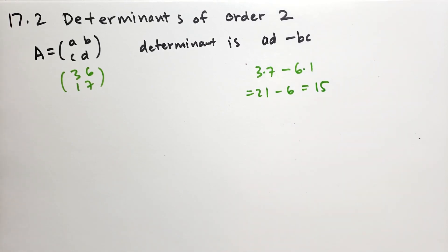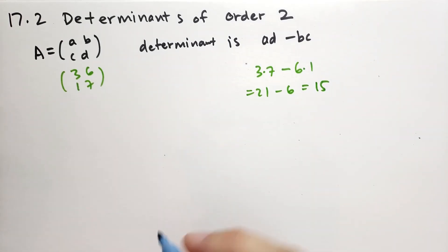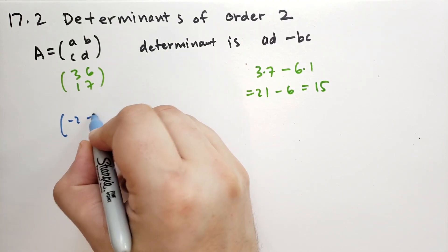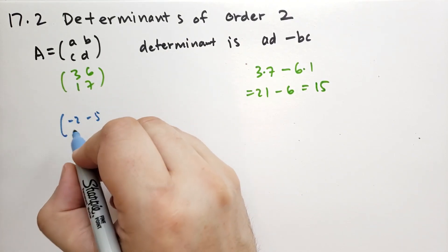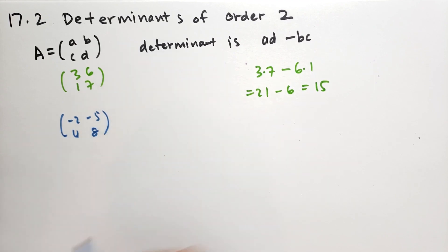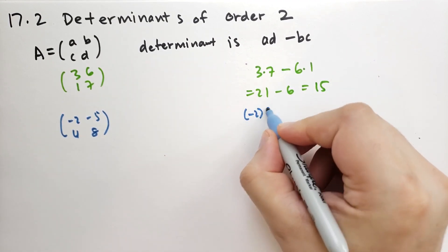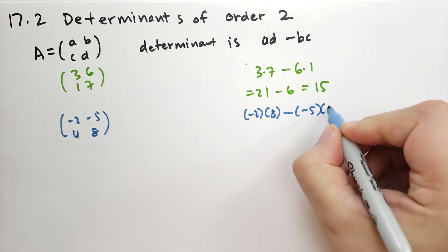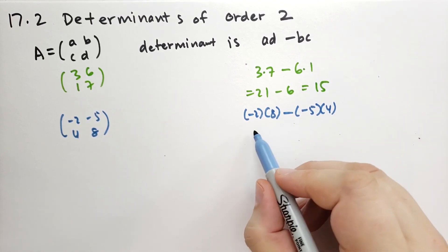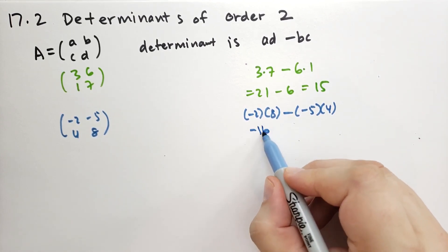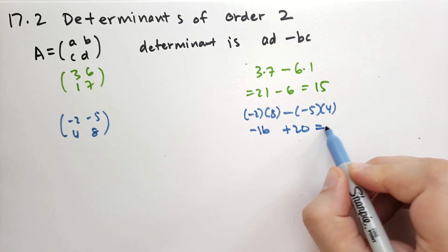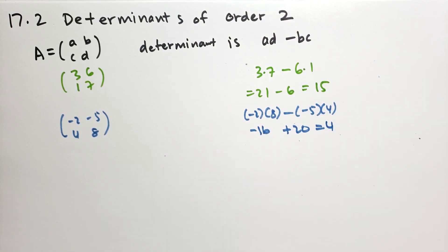Another determinant — let's use a different color, this nice blue here. So if we had the matrix [-2, -5; 4, 8], then we're going to take -2 times 8, minus (-5 times 4). So this is -16, minus a minus is positive, so that's plus 20, and so the determinant there is 4.